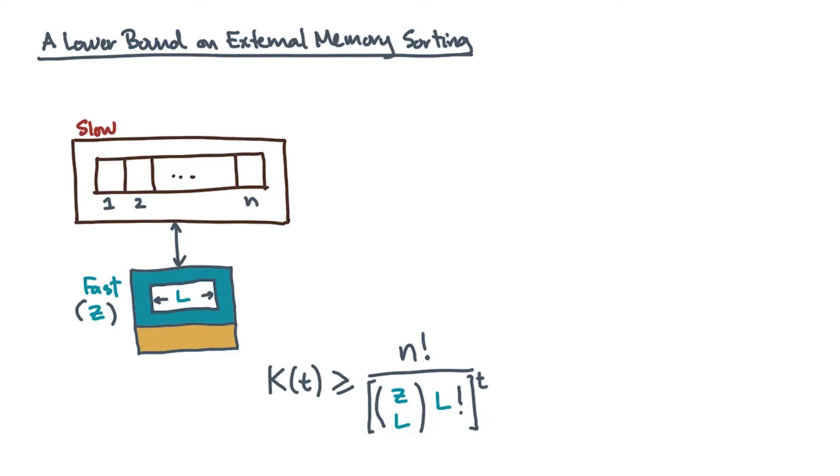Now, this count is actually a little bit more conservative than necessary. The l factorial factor assumes that we don't know the order of the l items that we just read. But if you've read the l items before, then that won't be the case. That's because you can only perform n over l reads of items that have never been read together before.